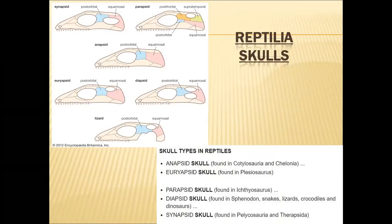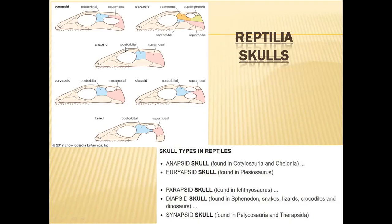Before we move to classification of Reptilia, it is very important to have some idea of the reptilian skulls, because the classification of Reptilia is purely based on the type of skull present in the reptilians. So here you can find six skulls shown, but there are only five types of skulls.